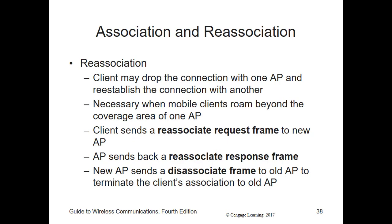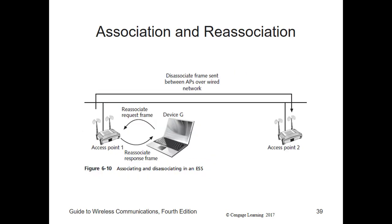Re-association occurs when a device determines that the link to its current AP is poor — since it's been scanning the medium and maintaining information about various APs in the extended service set. It switches to the frequency of the AP with the next strongest signal and sends a re-association request frame. If the new AP accepts, it sends a re-association response frame to the device, and then sends a disassociation frame to the previous AP to cut off that link. When I go from one AP to another, I re-associate — it's still the same SSID name — and tell the old AP to disassociate so it doesn't keep trying to give me bandwidth.